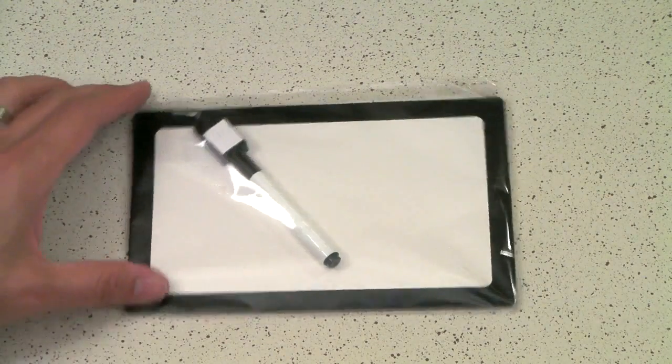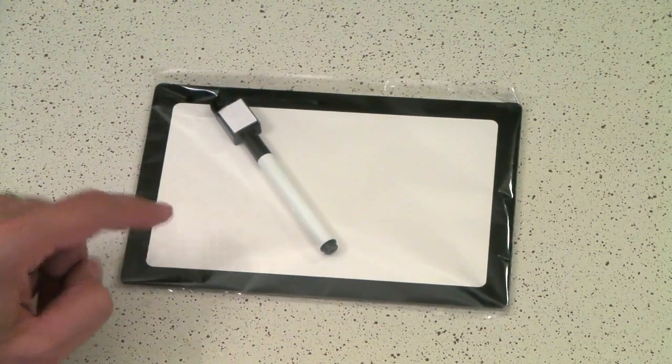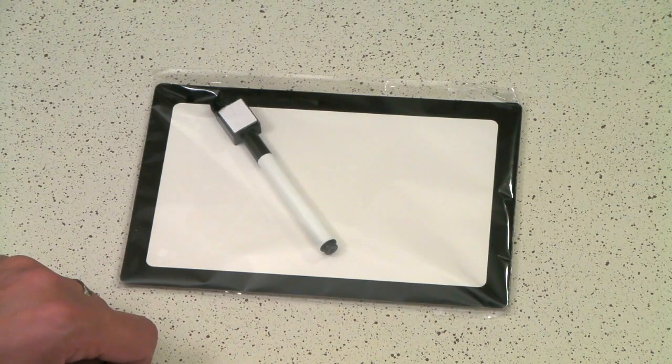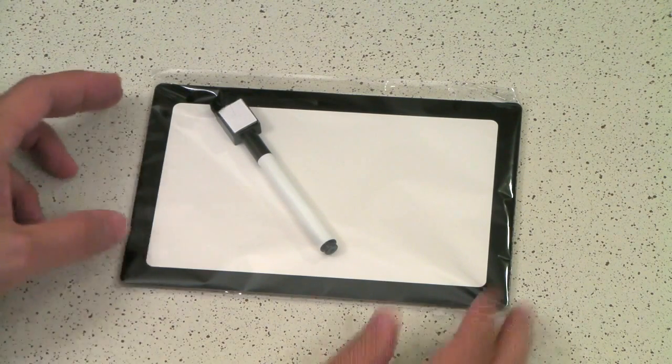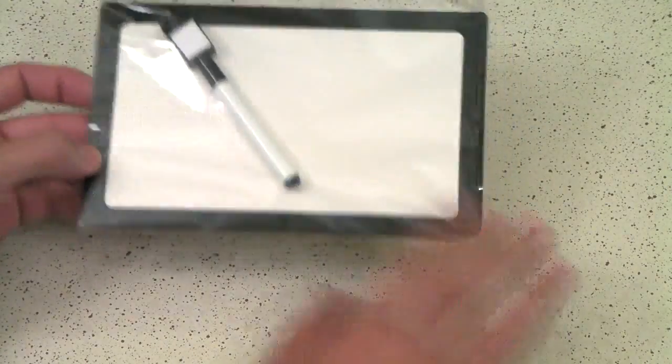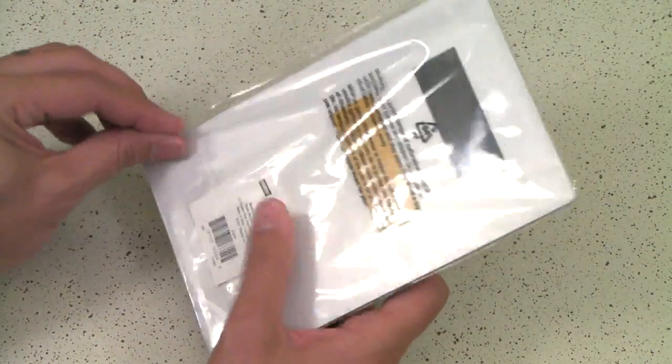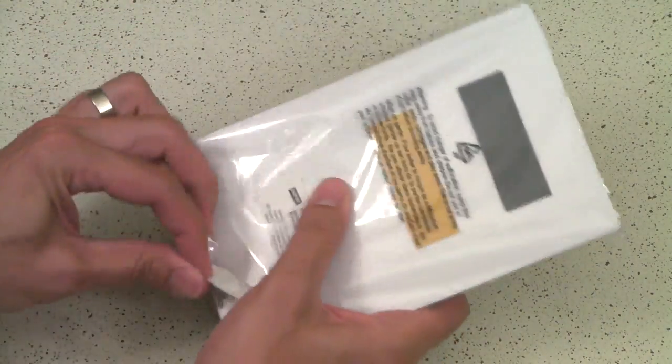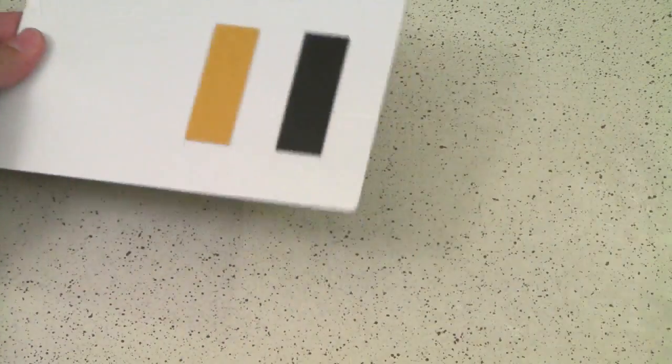First up we have this dry erase board. This was suggested by Hoggett Blanker. He found his smaller dry erase board at Staples. They have a dollar bin. Let's go ahead and open it up and see what we can do with this.